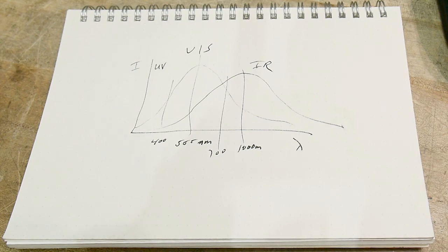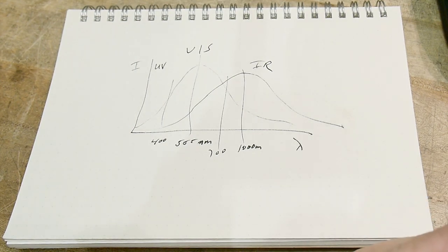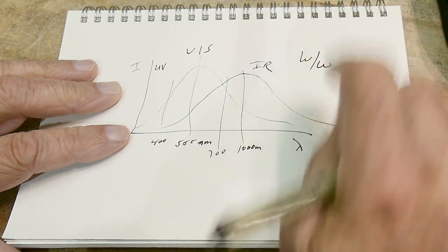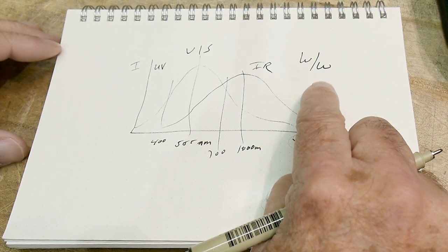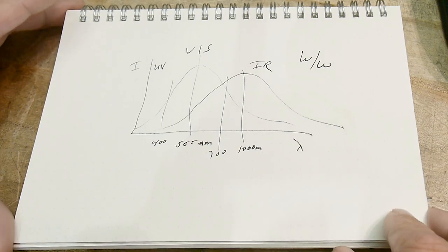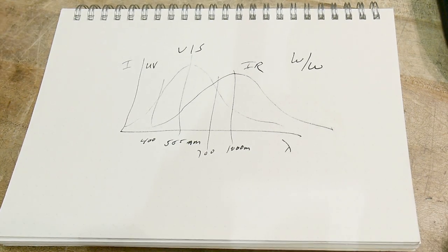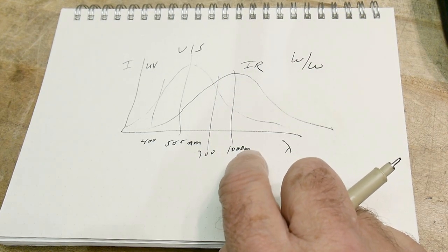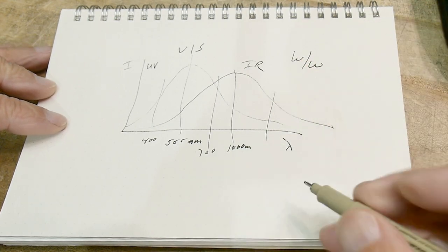People talk about lumens per watt - for one watt of electrical power, how many watts of optical power do you get? What about these sensors for IR? Are they looking at a thousand nanometers or farther out? There's near infrared and far infrared.